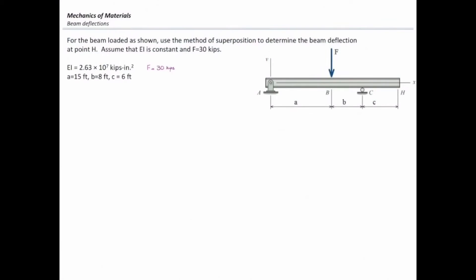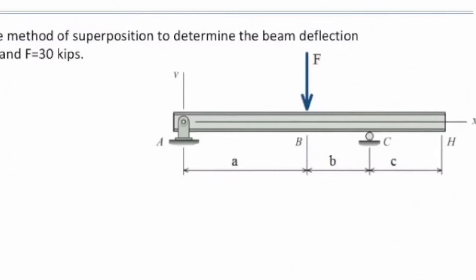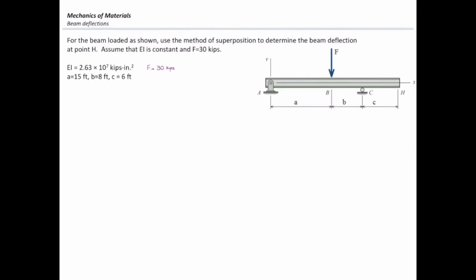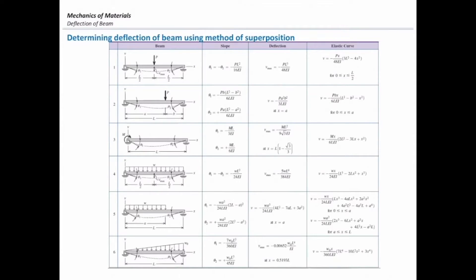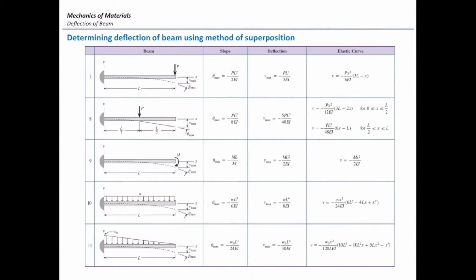The beam I want to start with consists of one pin support at the left end and one roller support somewhere between the right end and the left end. There is not any beam similar to that in this table or in this one, which makes solving this problem complicated. One way would be ignoring this problem and going to the next question in the exam. The second way would be figuring out how we can solve it using the tables we have.